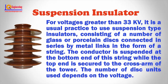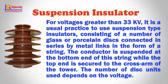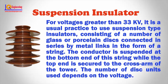Suspension insulator: For voltages greater than 33 kV, it is usual practice to use suspension type insulators, consisting of a number of glass or porcelain disks connected in series by metal links in the form of a string. The conductor is suspended at the bottom end of the string while the top end is secured to the cross arm of the tower. The number of disk units used depends on the voltage.